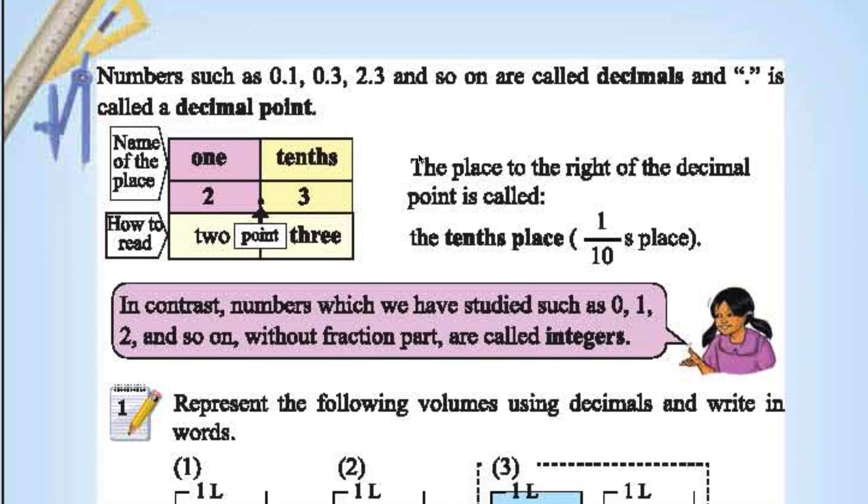Numbers such as 0.1, 0.3, 2.3 and so on are called decimals. And the point is called decimal point. The point in between 0 and 1 is called decimal point.